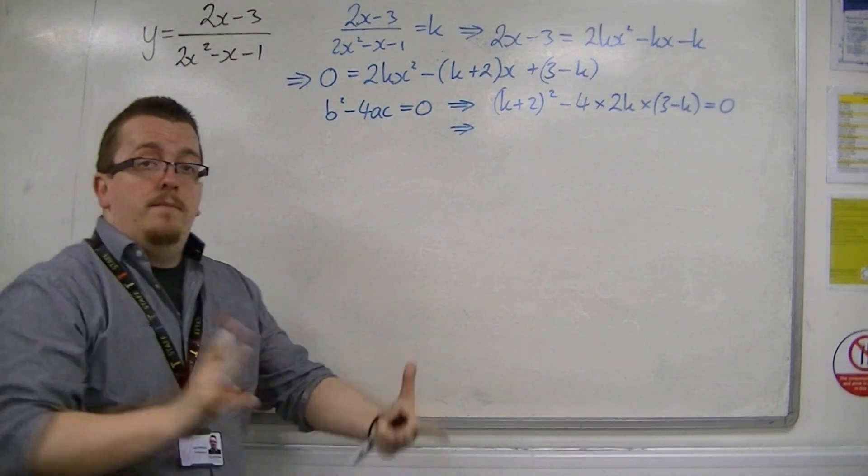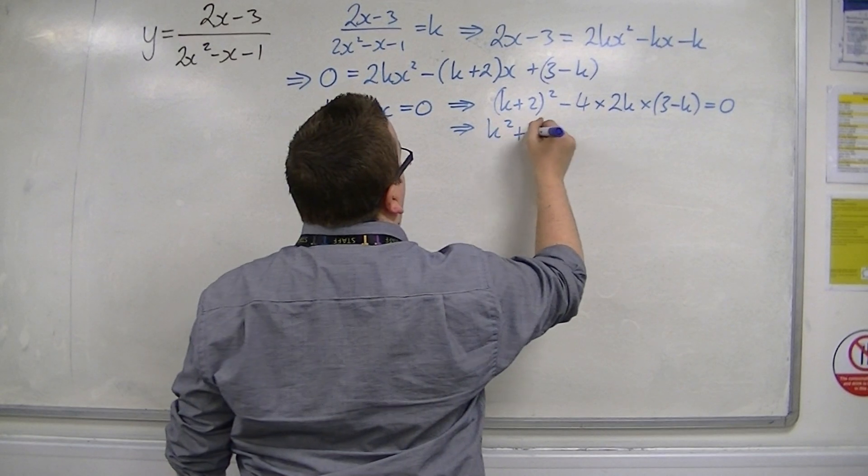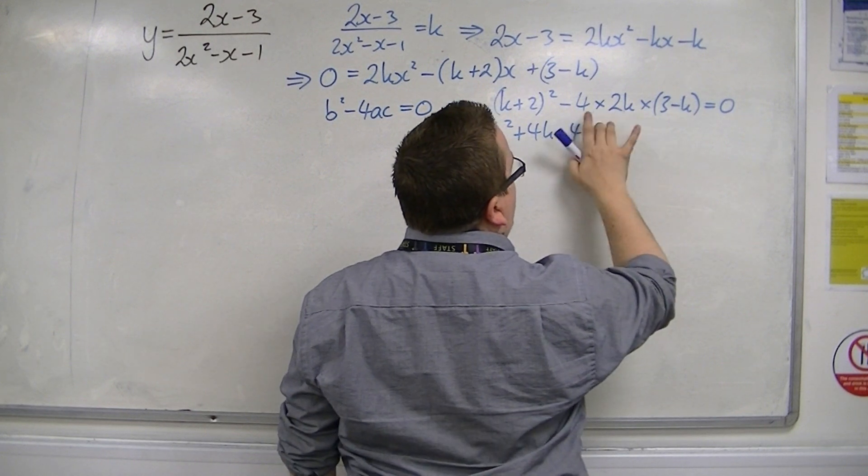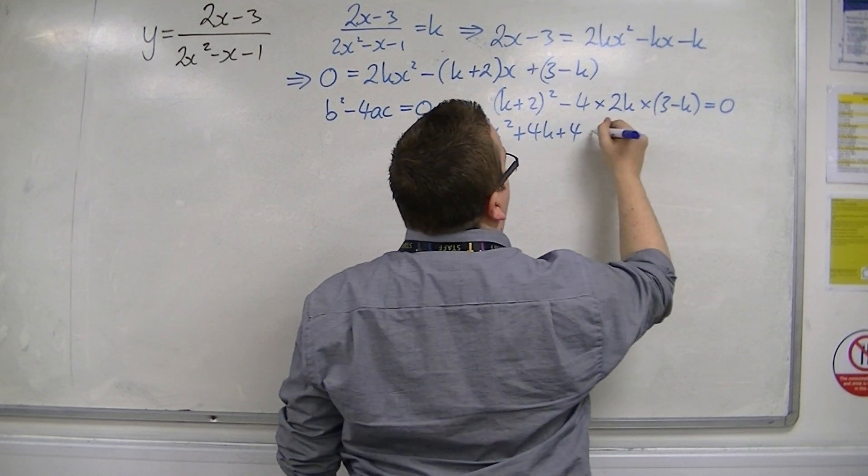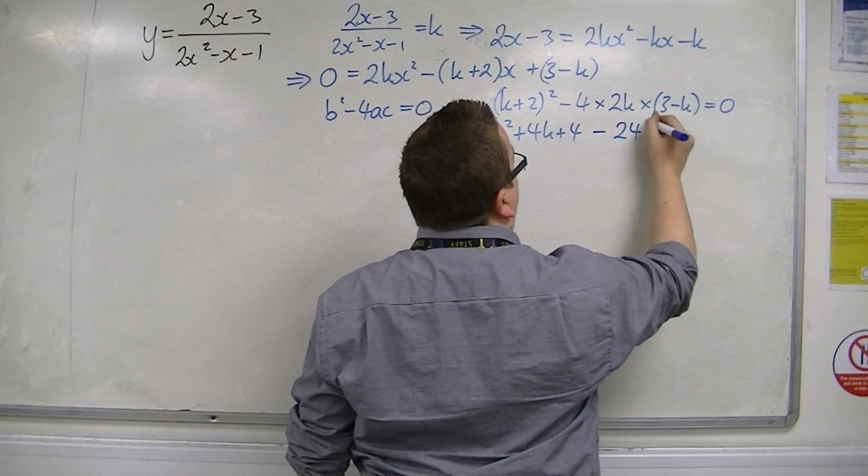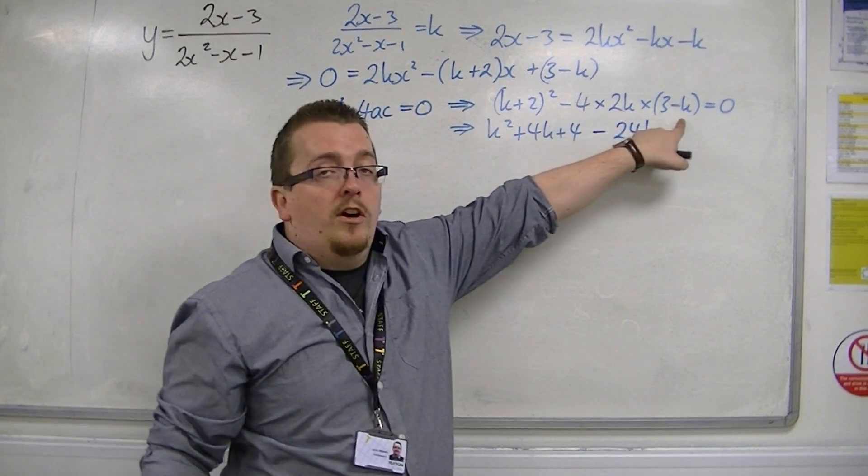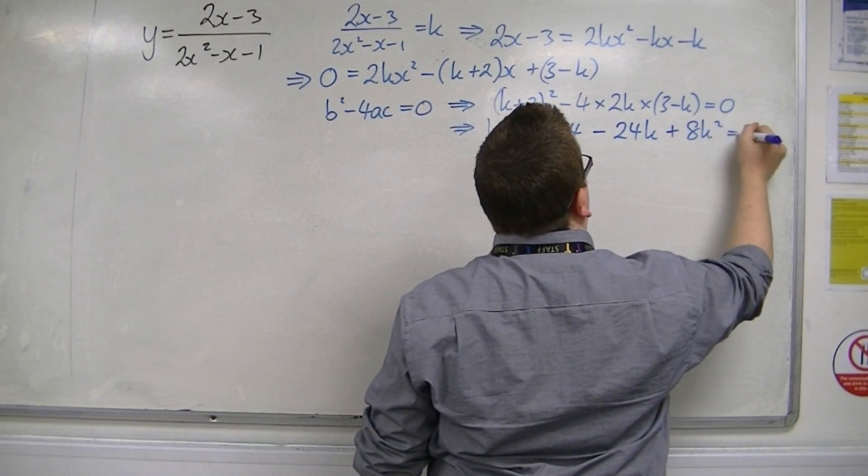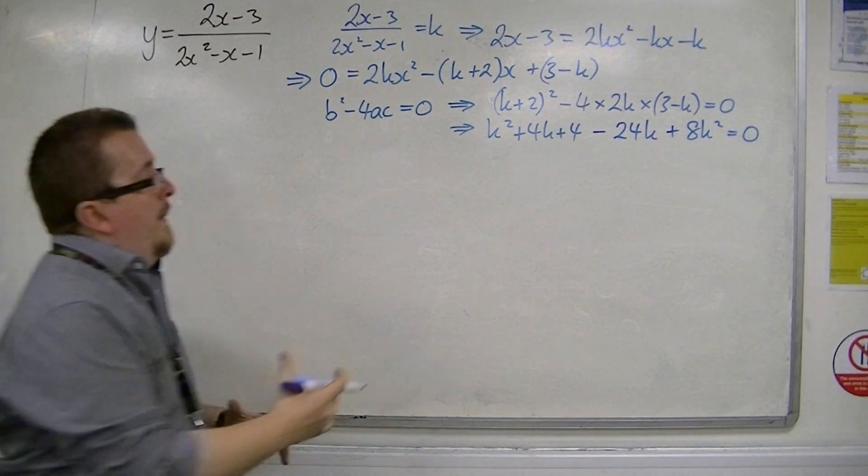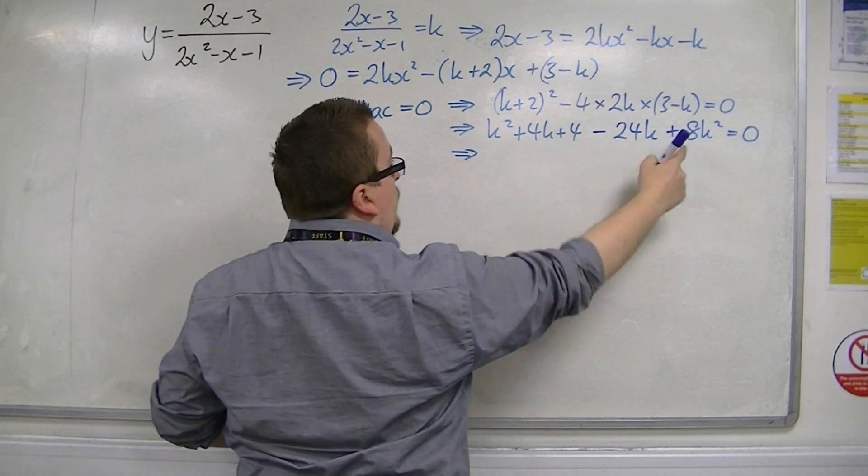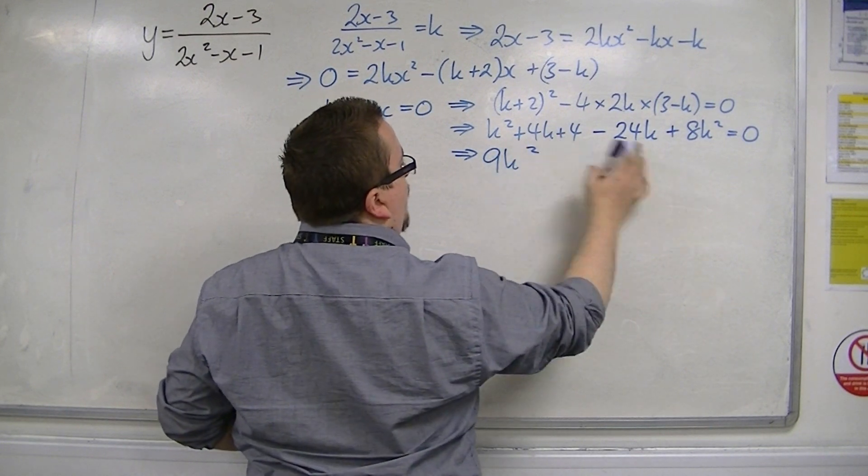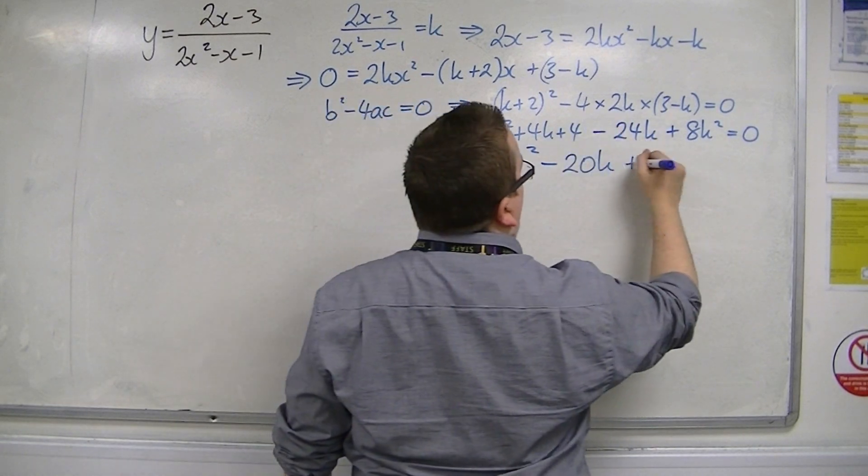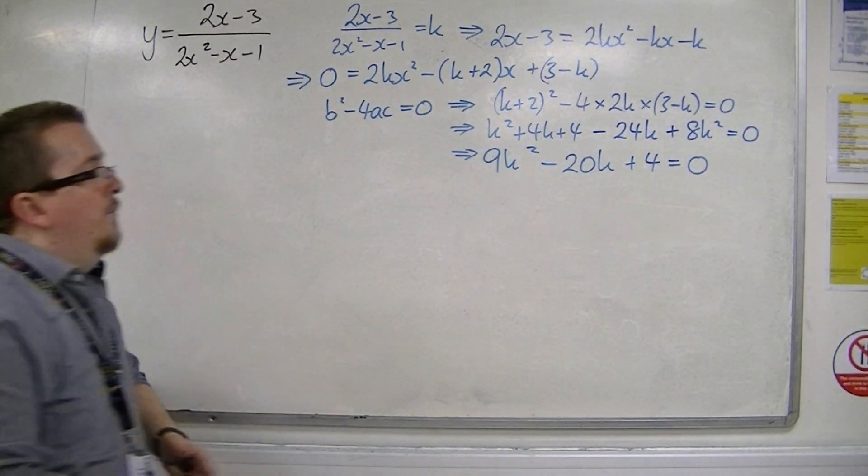Now we're going to want to expand it and simplify everything. So we've got k squared plus 4k plus 4, and then we've got minus 4 times 2k, so that's minus 8k times 3, so minus 24k. Then we've got minus 8k times minus k, so that's plus 8k squared. So together, we have k squared and 8k squared, so 9k squared. We've got 4k to take away 24k, so minus 20k, and we've got the 4 left over.